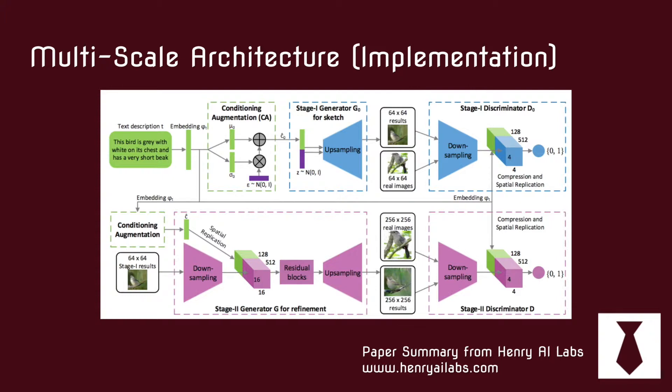Following the architecture diagram sequentially: it takes the text description and embeds it using something like word2vec, but they have a different kind of mechanism to make the word vector embeddings more visually semantic. They then pass this embedding through the conditioning augmentation technique, which is the second main idea of this paper. Then it uses this to generate the stage 1 image, which is a 64x64.